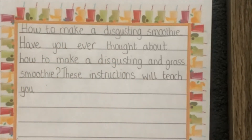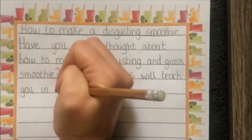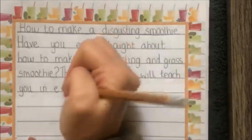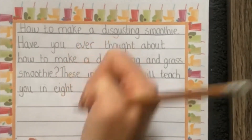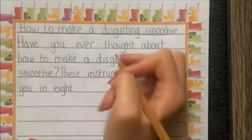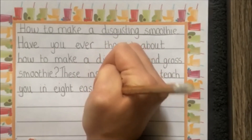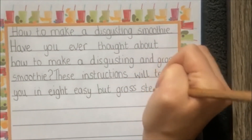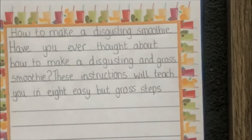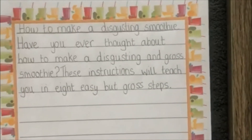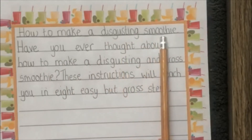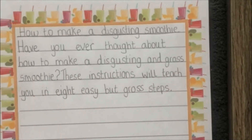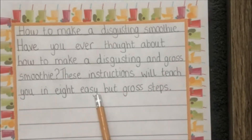And I'm going to add a bit extra: these instructions will teach you in eight easy but gross steps. I know how to write eight — rather than drawing the letter A, I can write the word. Eight has our special friend I-G-H. What do I need at the end of my sentence? Well done — I need a full stop. Let's read it from the beginning: How to make a disgusting smoothie. Have you ever thought about how to make a disgusting and gross smoothie? These instructions will teach you in eight easy but gross steps.